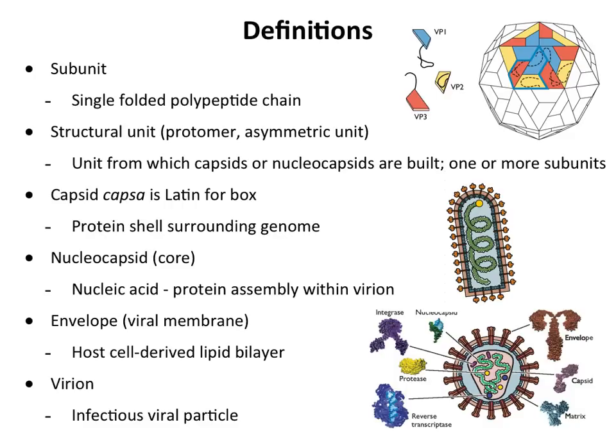I'll use all these terms a lot and I want you to know what they mean. A subunit — when we talk about building a particle, a virus particle, or a virion, we talk about subunits. These are single polypeptides. For example, VP1, VP2, VP3 — VP is often used to describe these; they're virion proteins. These are subunits because they fold up to make a structural unit.